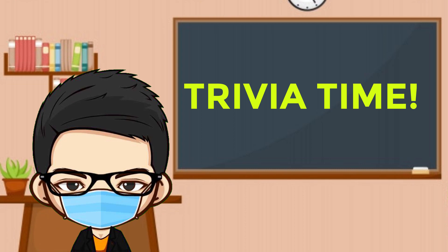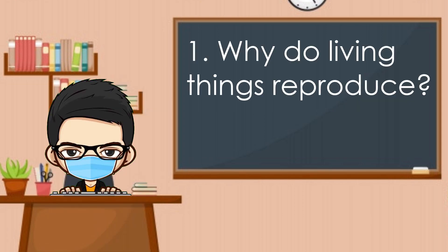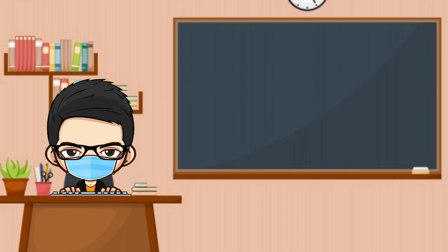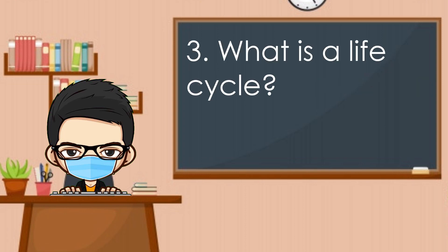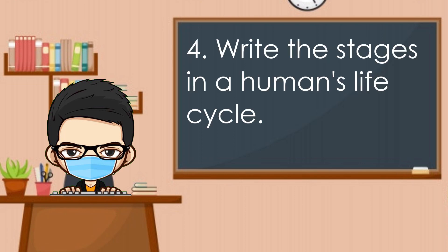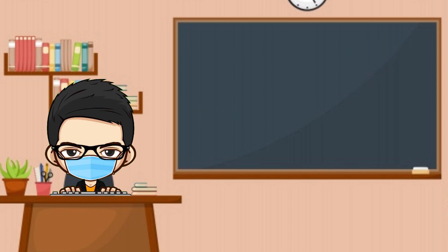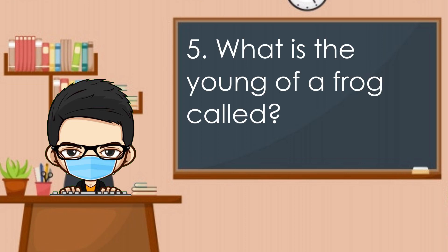All right, to conclude our lesson today, let's have trivia time. Please answer my questions. Number one: why do living things reproduce? Number two: how do living things reproduce? Number three: what is a life cycle? Number four: write the stages in the human life cycle. Number five: what is the young of a frog called?